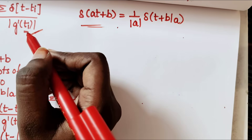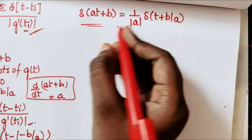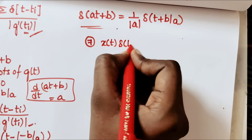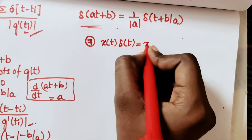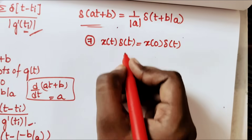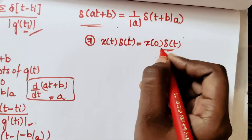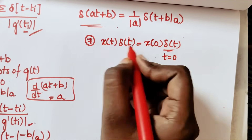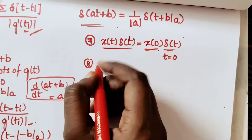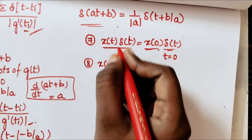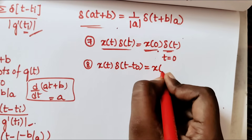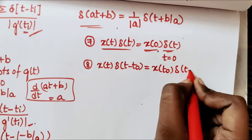Here comes the next property — the seventh property. x(t) · δ(t): the value of this equals x(0) · δ(t). How can we say this? We know that δ(t) will be 1 at t equal to 0, so this value will be equal to x(0) · δ(t). What if we take x(t) into the delayed version of the impulse signal δ(t − t₀)? Then it will be equal to x(t₀) · δ(t − t₀). This is the eighth property.